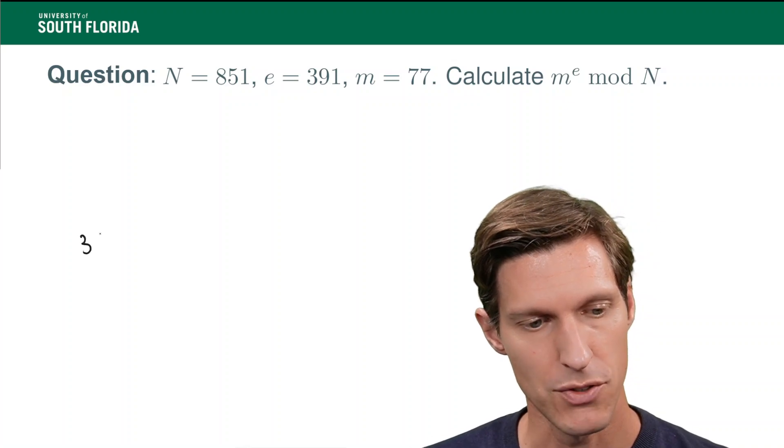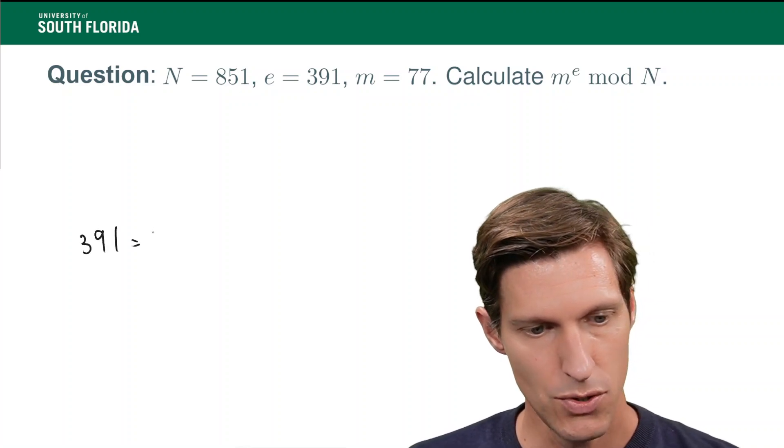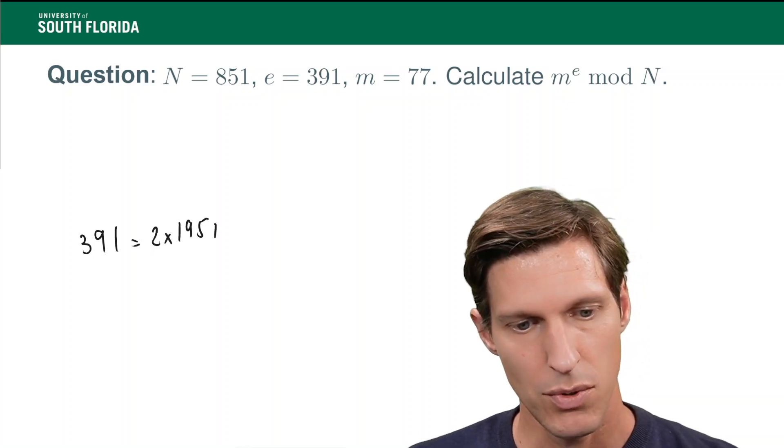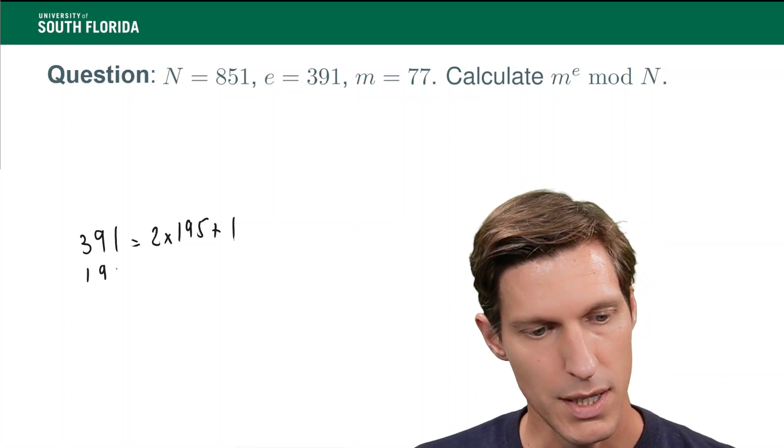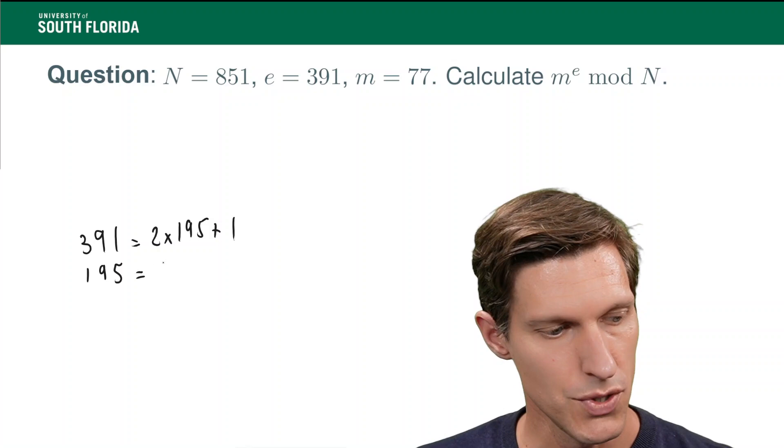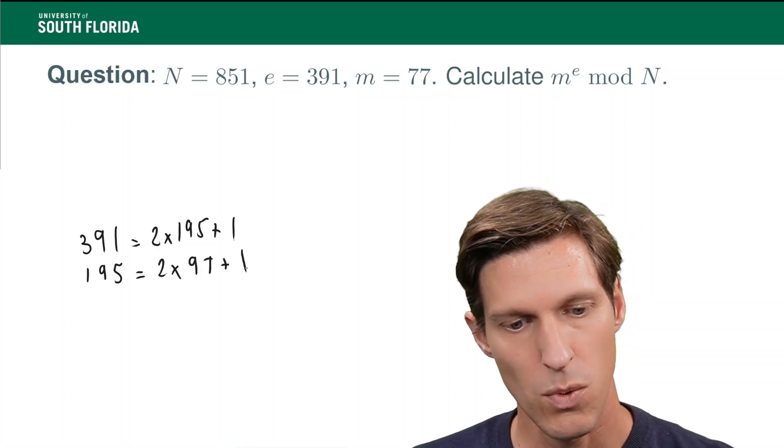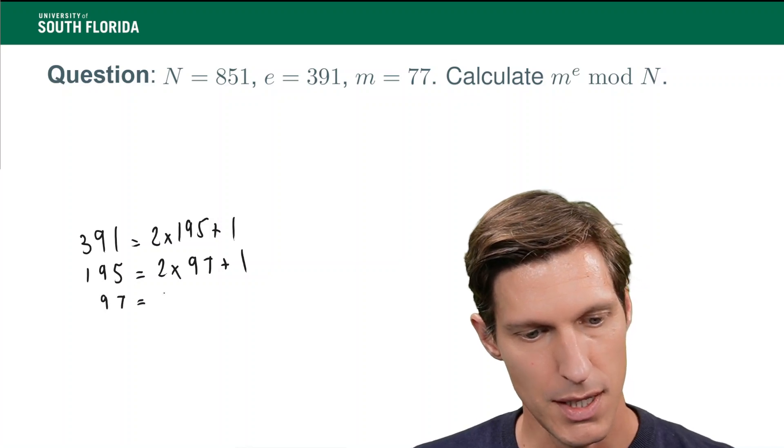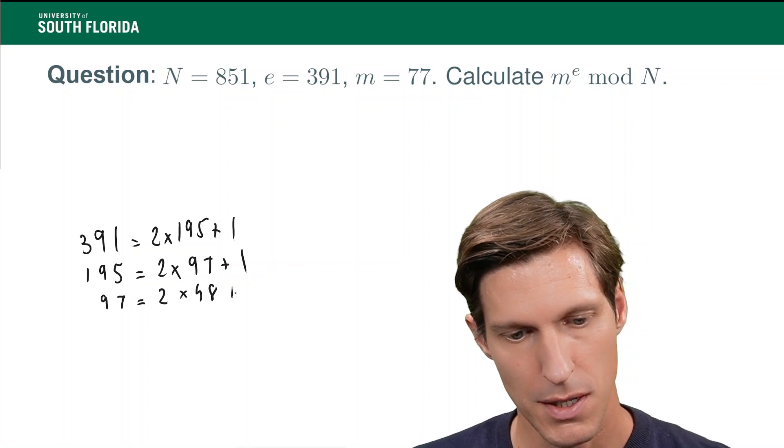So, the first time you divide by two, you have 391, which is two times 195 plus one. And now, take 195 and divide by two. So, 195 equals two times 97 plus one, then 97 is two times 48 plus one.